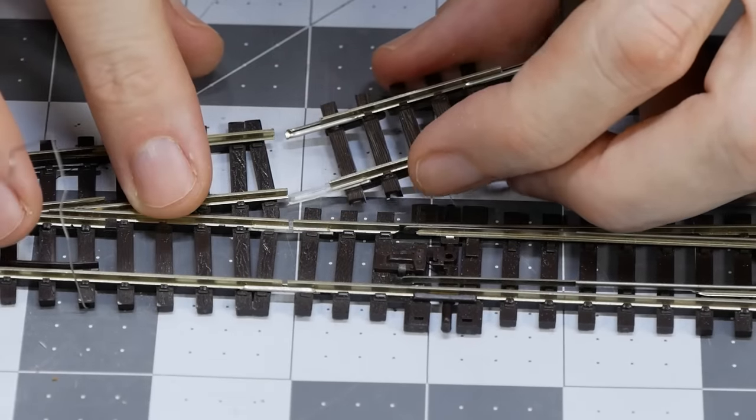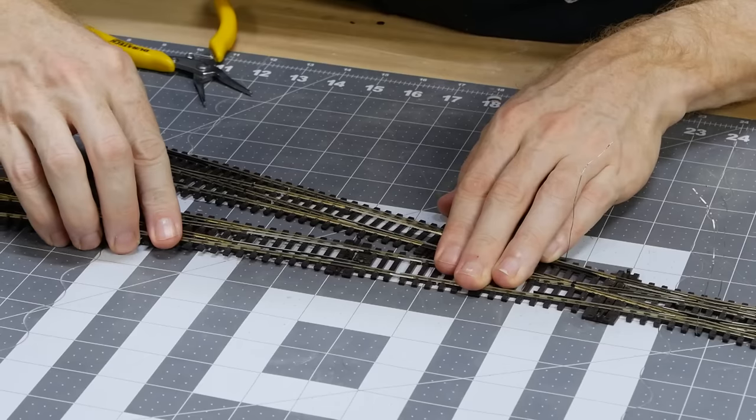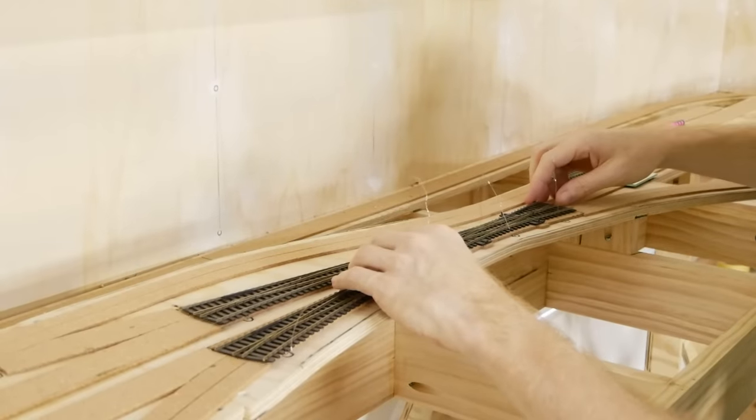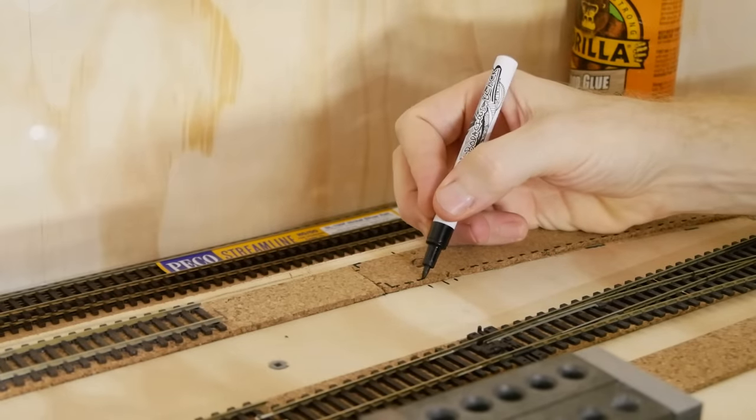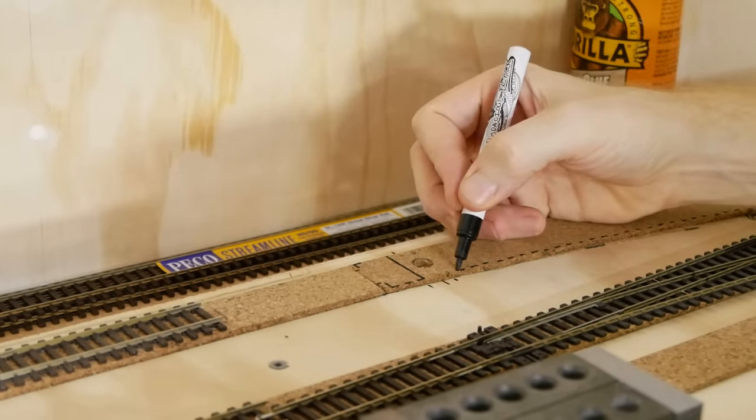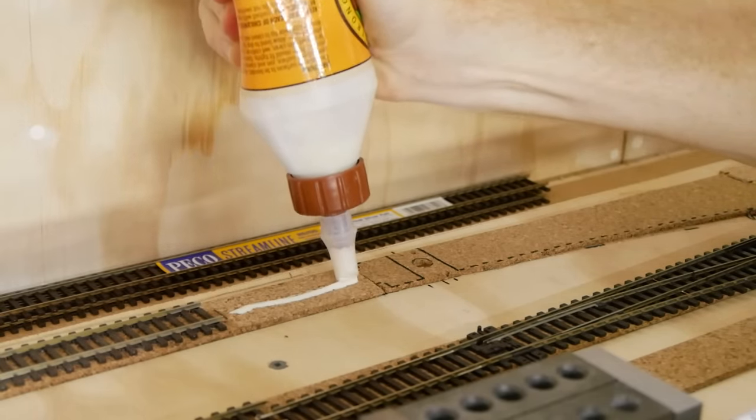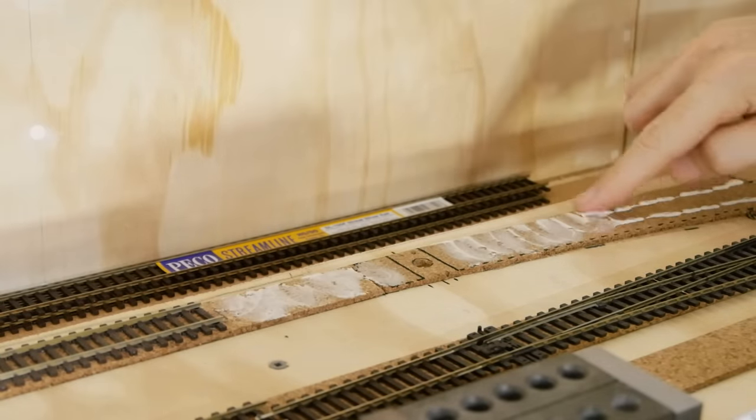Now with the cluster of turnouts assembled it can be positioned ready to be fixed down. I mark the area where the throw bar is. This needs to be able to move freely so I don't want any glue there.